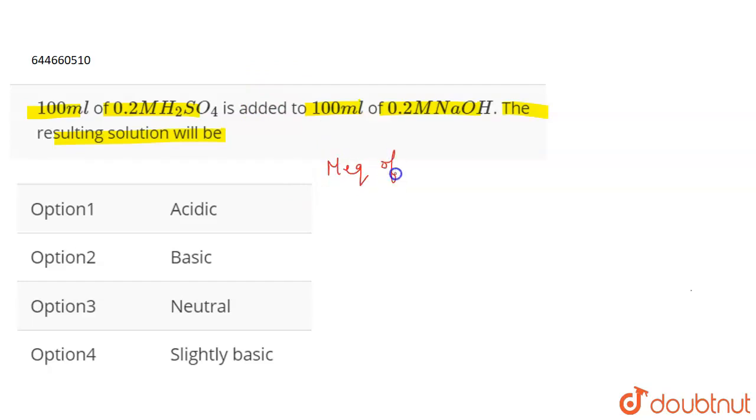If we talk about the milliequivalence of H2SO4, that will be molarity times volume in ml times n-factor. Molarity is 0.2, volume in ml is 100, n-factor is 2 because H2SO4 dissociates to give 2 H+ ions.